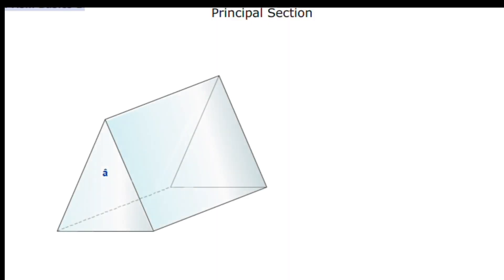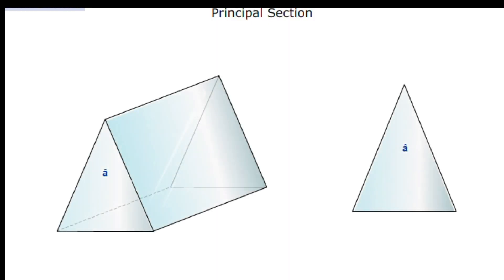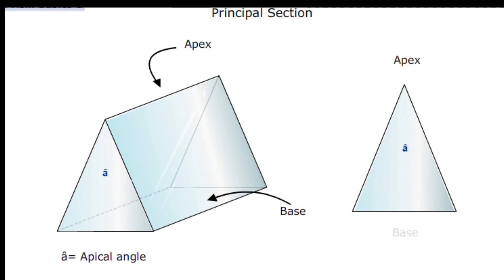Prism Basics: A prism is usually represented diagrammatically as a principal section of the solid from which it is produced. The prism base consists of the two sides that are inclined to form the prism apex. The angle subtended by the apex is denoted as the apical angle, A. The base of all prisms is thicker than the apex.